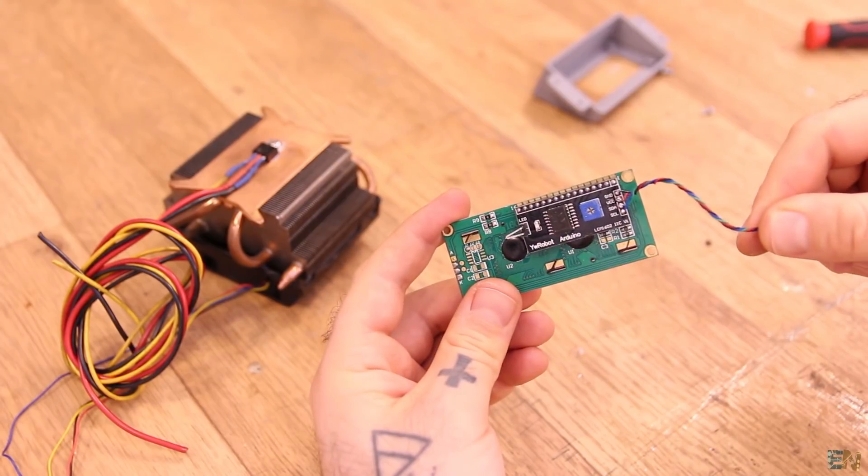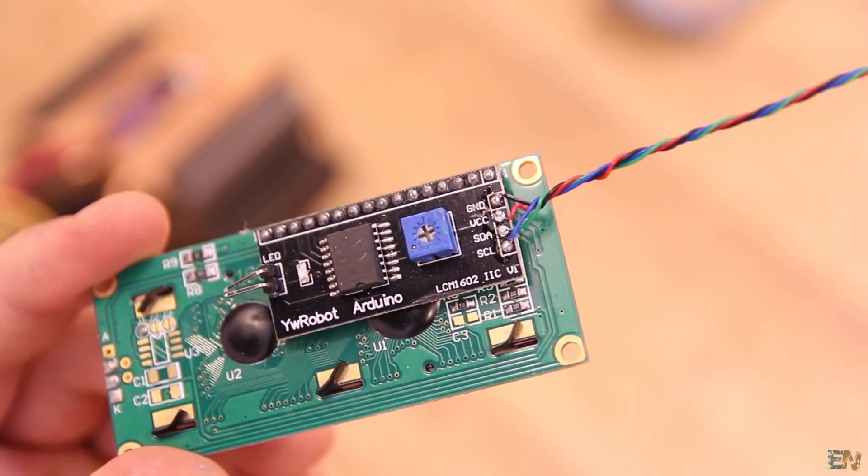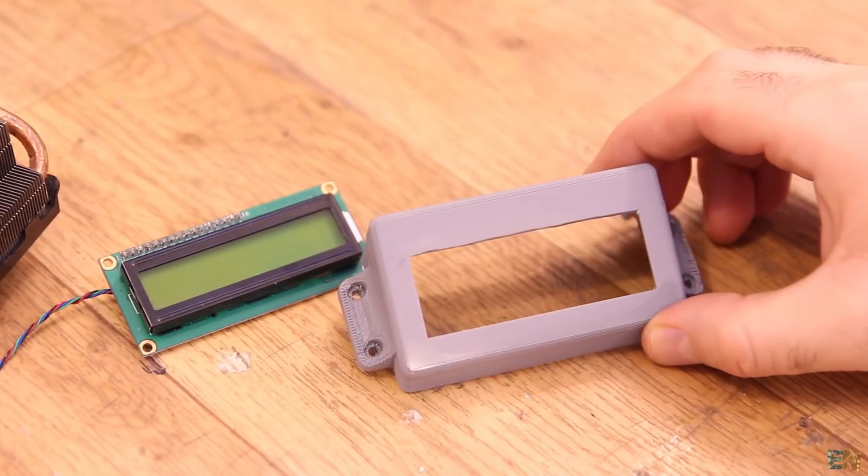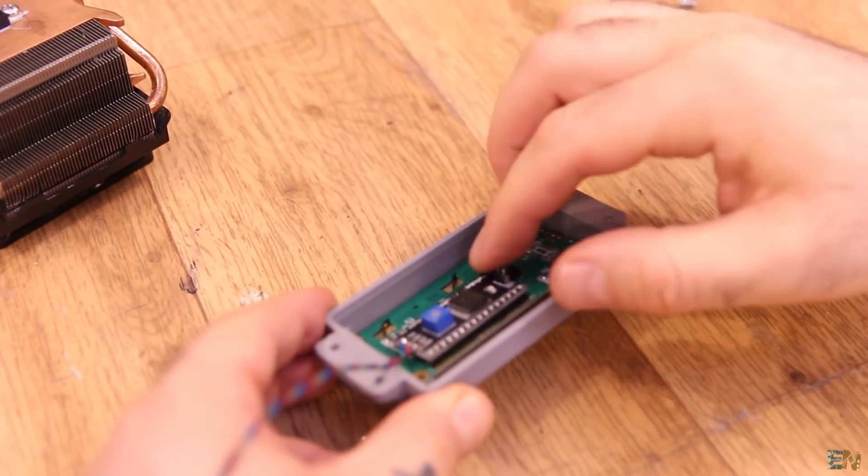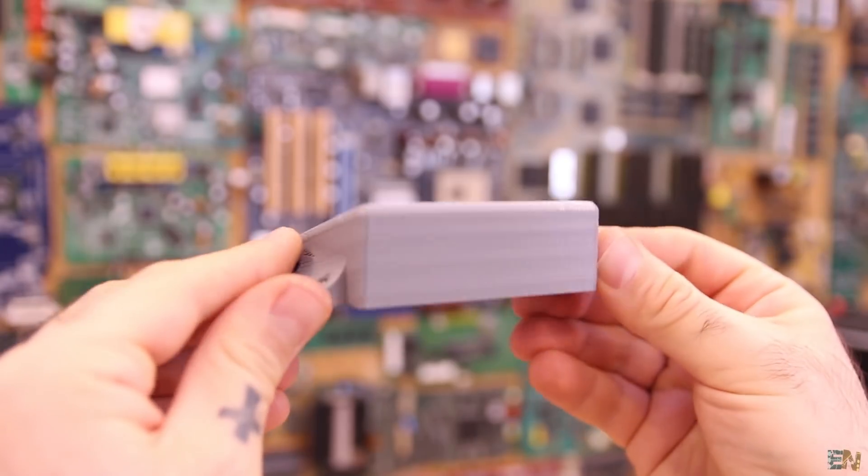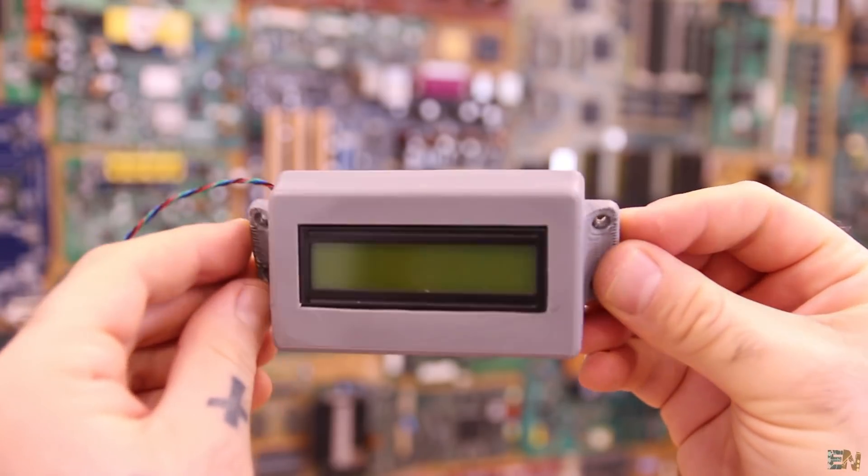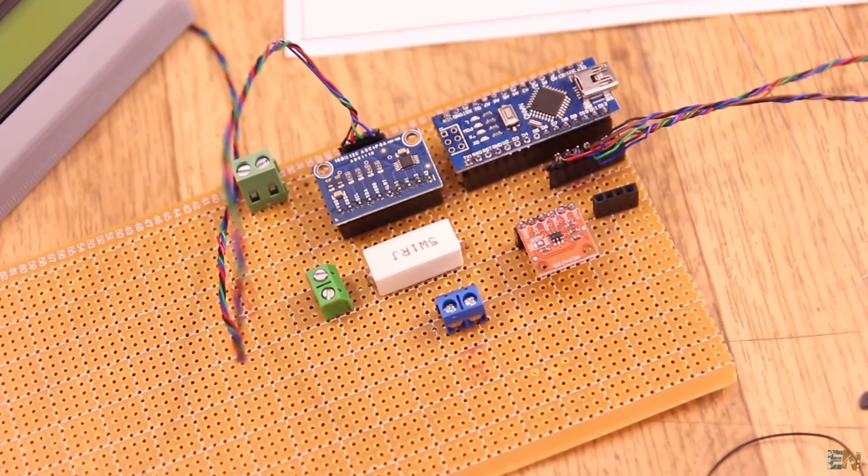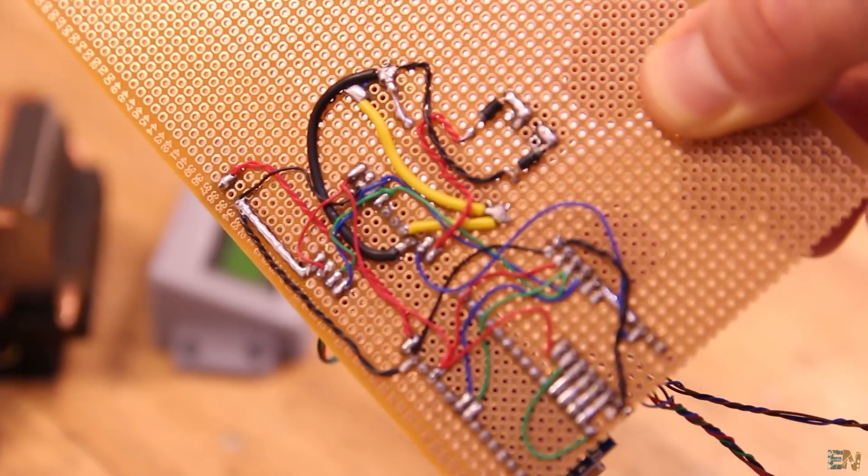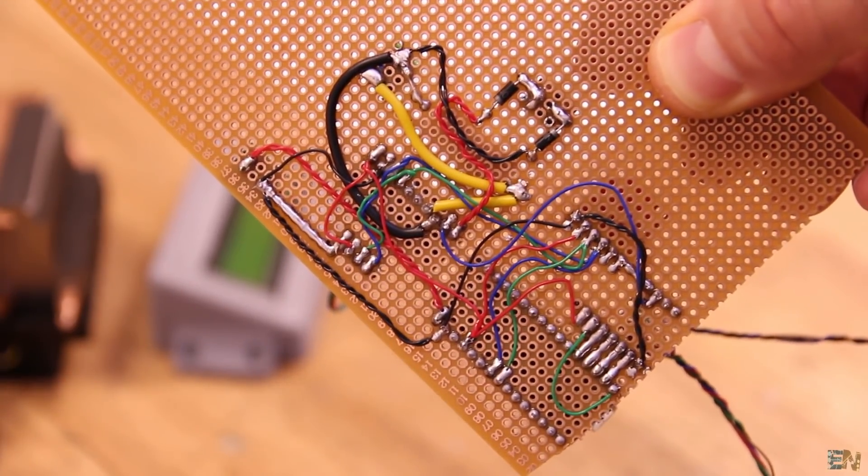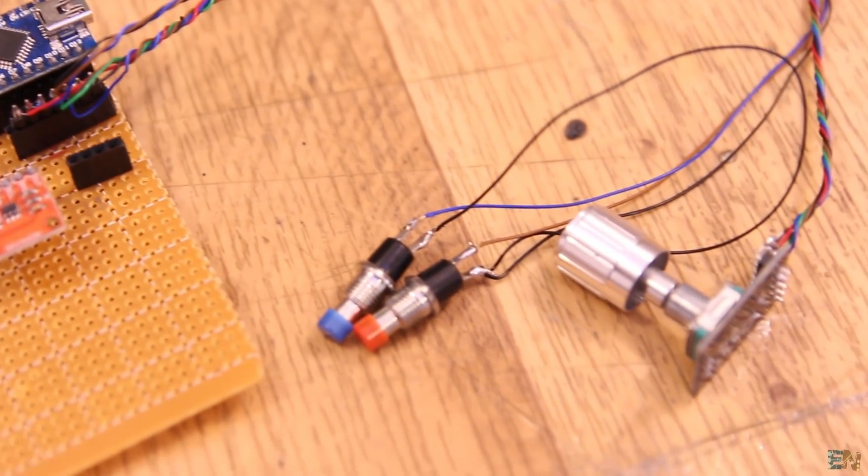For the LCD, I solder 4 wires for data, clock and power. Then I've 3D printed this plastic cover and placed the LCD inside with screws. For the main circuit, I solder everything on the prototyping PCB. From here I have some wires connected to the screen, to the encoder, to the push buttons and the MOSFET.